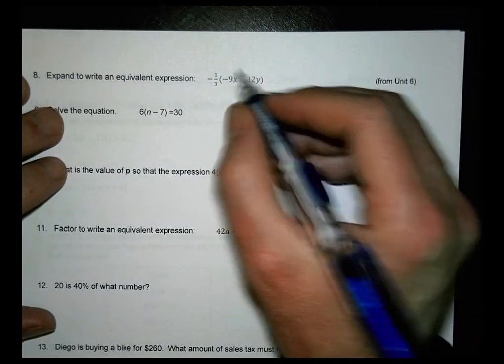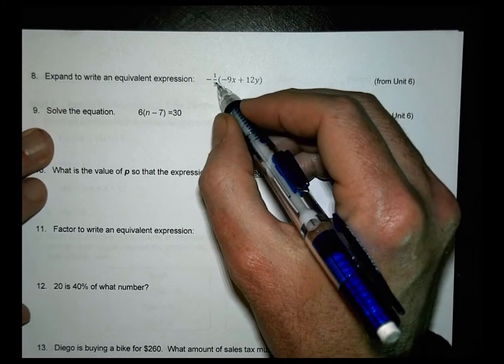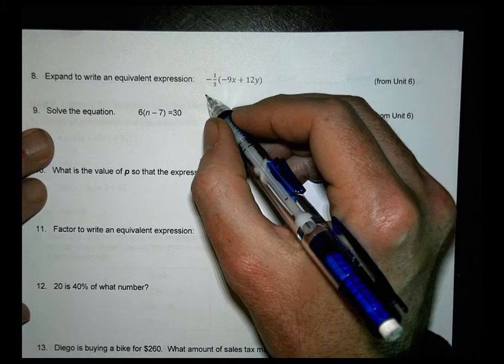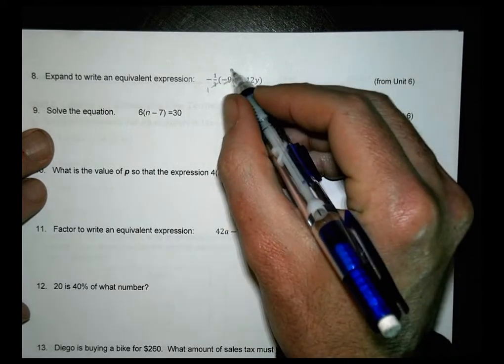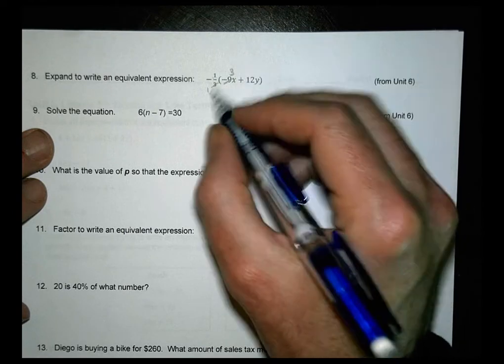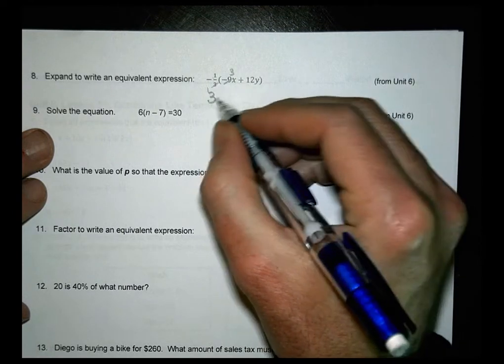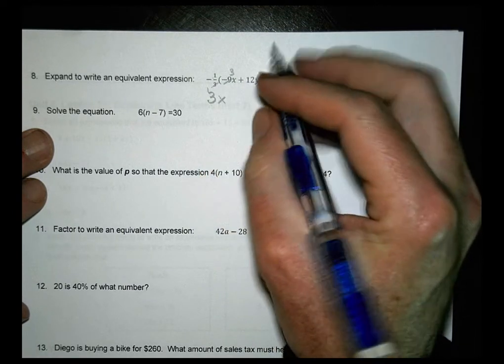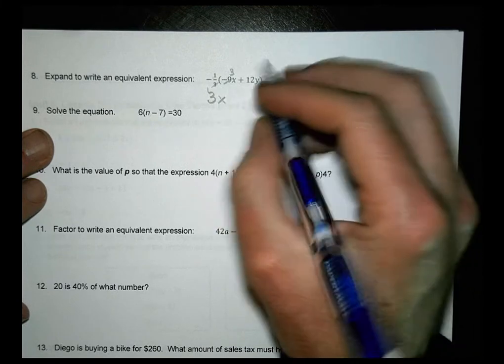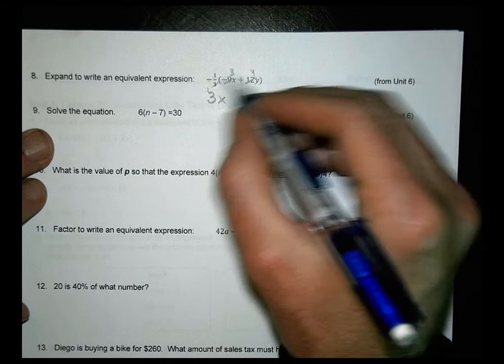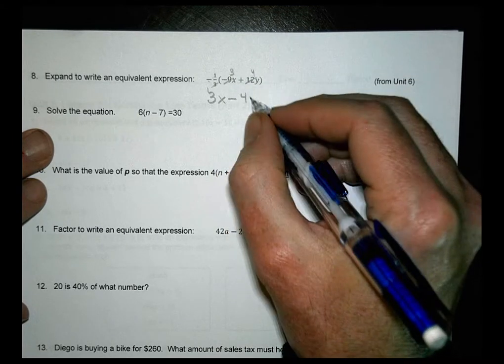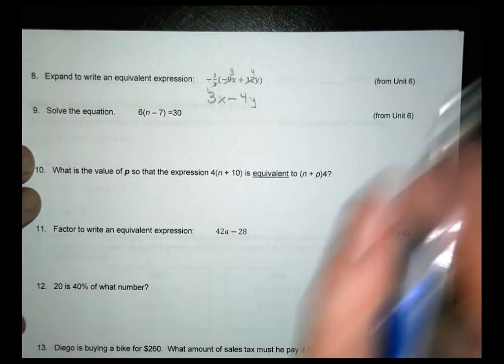So this becomes negative 1 third times negative 9 is a positive. So we can worry about that. Now, 3 goes into 9 three times. 1 times 3 is 3. So we have a positive 3x. And then 1 third times 12. 3 goes into 12 four times. That's a negative times a positive. So I have a negative 4y.